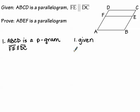ABCD is a parallelogram, so let's look at that more closely. With this parallelogram there are multiple things I know: opposite sides are parallel, opposite sides are congruent, opposite angles are congruent, etc. I want to determine which of those properties, definitions, or theorems might be useful, looking at the second given that segment FE is parallel to segment DC.